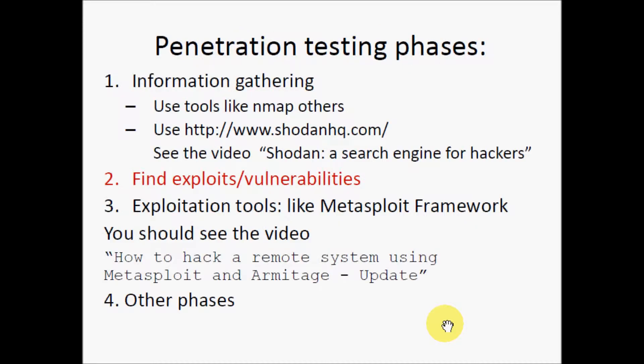When we want to test a system, first we have to gather information about the system using tools like Nmap, Nessus, or OpenVAS — tools like these — or using a search engine like Shodan. If you want to know more about Shodan, you should see this video.